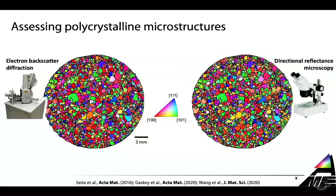At NTU we figured out a way to get the same information by using an optical microscope instead, not a scanning electron microscope. This technique is called Directional Reflectance Microscopy, short DRM. If you compare these two maps visually, you will hardly see any differences. We're using an optical microscope to get grain orientation information. At this point you might be wondering two things. The first is: how is it even possible? Because we know that optical microscopy has limited spatial resolution restricted by the diffraction barrier of visible light - you can't possibly measure crystallographic quantities directly.